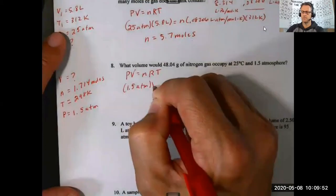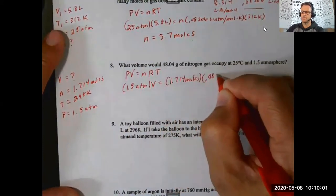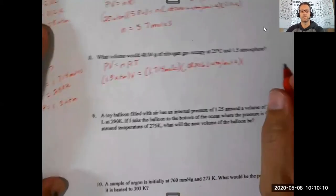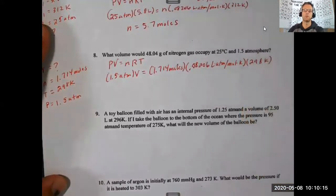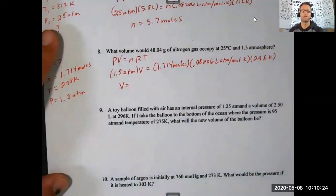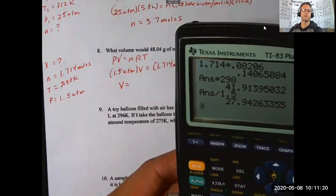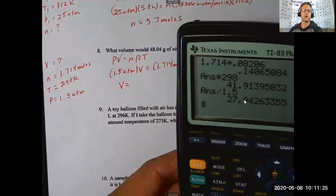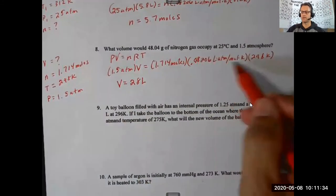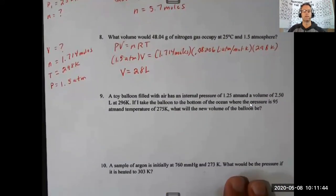Now I use PV = nRT, solving for volume. Pressure is 1.5 atmospheres, n is 1.714 moles, R is 0.08206 liter·atmospheres per mole·kelvin, and T is 298 kelvin. Writing in labels is important so you can track unit cancellation. The calculation gives 27.94... liters. I have two significant figures in my problem, so I round to 28 liters. Units like moles, kelvin, and atmospheres cancel, leaving liters.